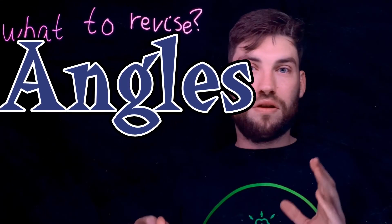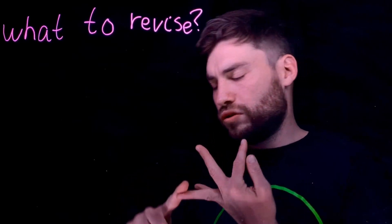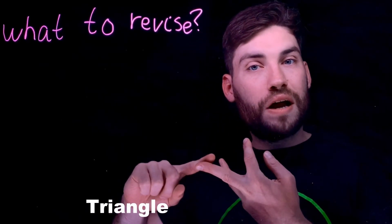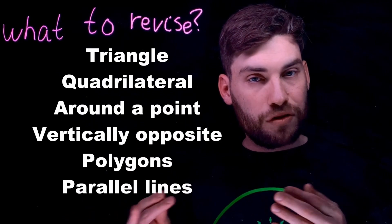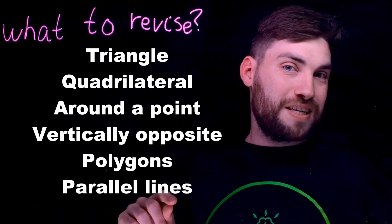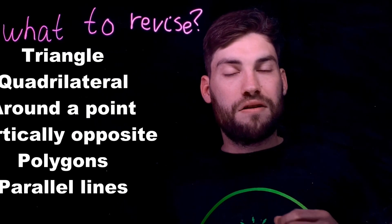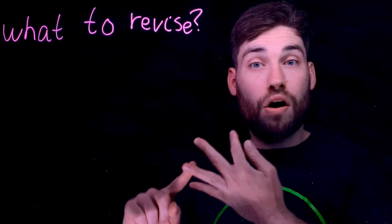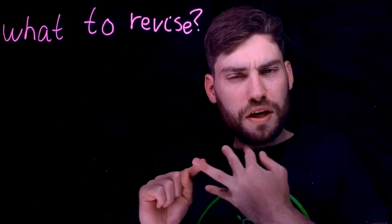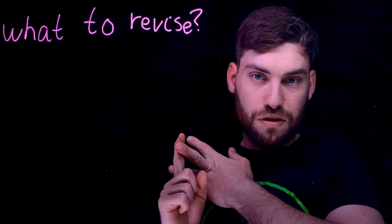The third section is angles. There's a lot to know about angles: angles in a triangle, a quadrilateral, around a point, vertically opposite angles, angles in regular polygons — more than three, four, five, six, seven, eight sides — irregular polygons, and also parallel lines. That covers co-interior, alternate, and corresponding angles — you really need to know those.